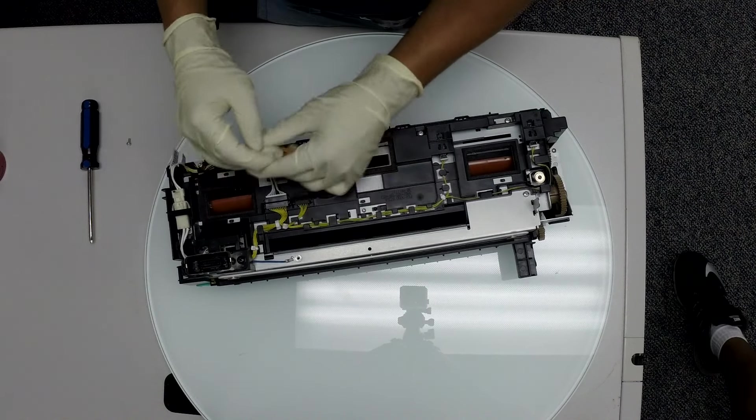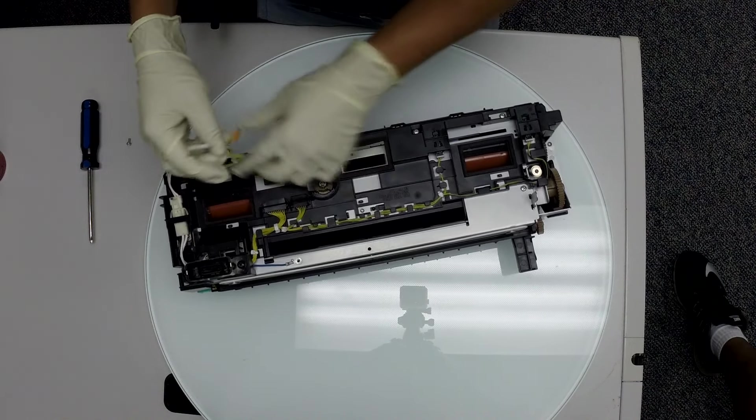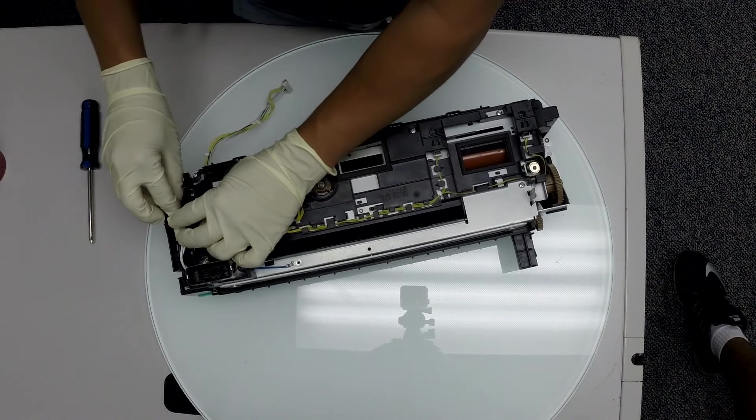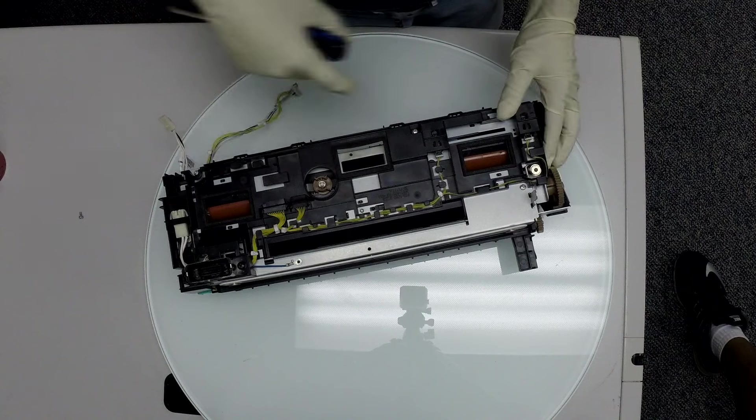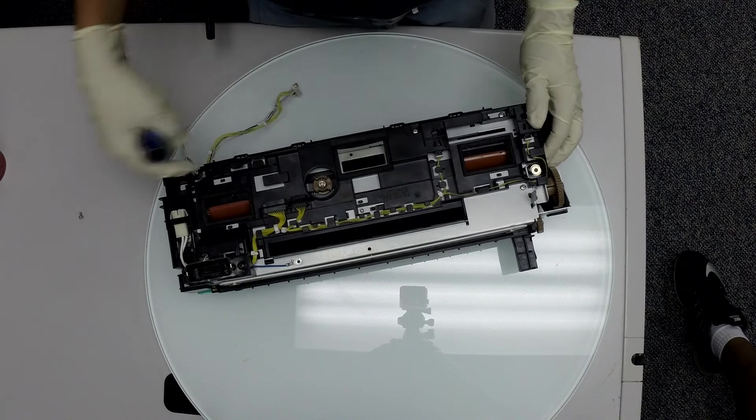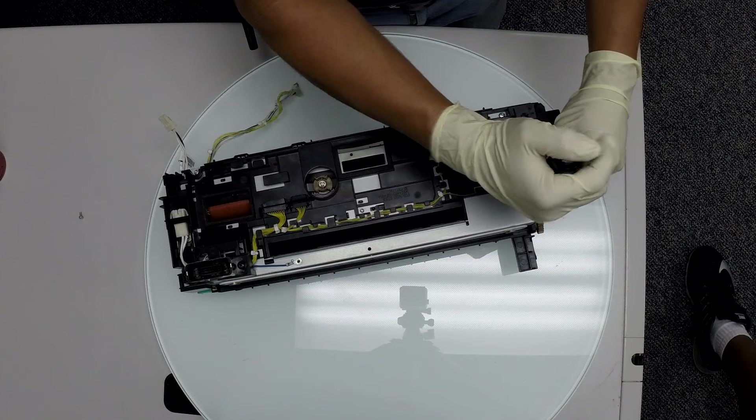Let's start by unplugging all the harnesses on top of the fuser. Now carefully run the wires all around the fuser. Now let's remove the four screws and carefully lift up the top cover.